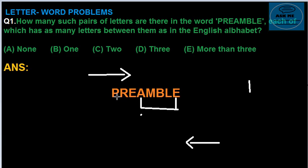B, C, D, E — meeting again. B, C, D, E — meeting again. B, C, D, E — meeting again. So our second pair is found here.